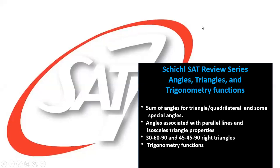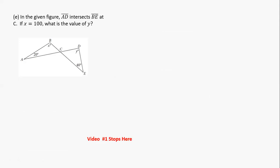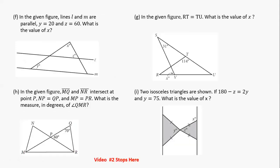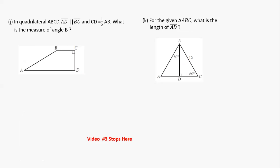Hi everybody, welcome back to the Chico SAT review series. We are still in the unit on angles, triangles, and trig functions. This is video number three and we're going to focus on understanding two special right triangles. So we're going to work on the 30-60-90 and 45-45-90 degree right triangles. So far we did video number one and video number two, and now we're going to focus on video number three — the special right triangles.